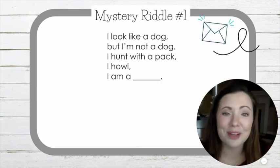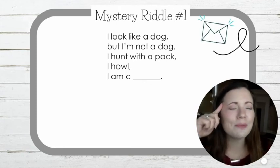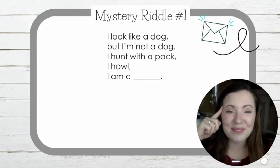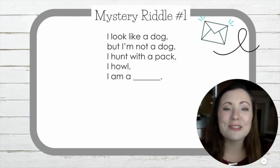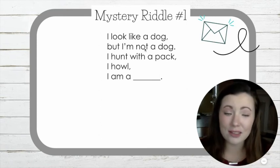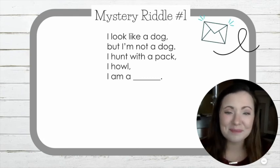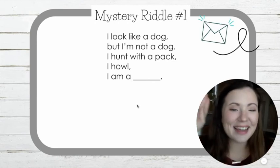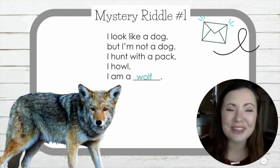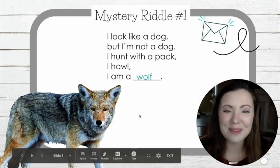We're going to start with a riddle. Do you remember doing riddles before? I will read the riddle and you will be thinking about what the animal might be. Once you know, whisper it into your hand and we'll release it at the same time. Mystery riddle number one: I look like a dog, but I'm not a dog. I hunt with a pack. I howl. One, two, three — a wolf. A wolf looks like a dog, but they're not a dog. They hunt with a pack and they howl. Good job.